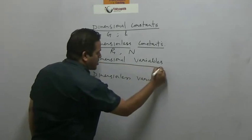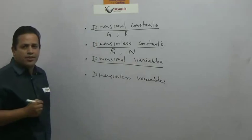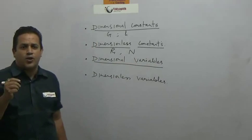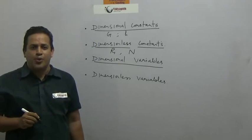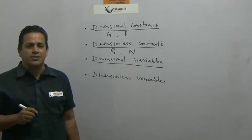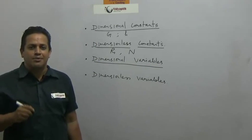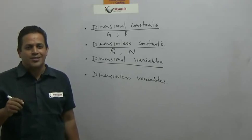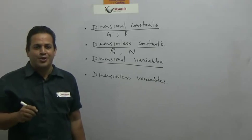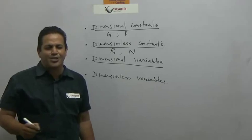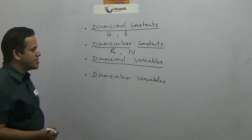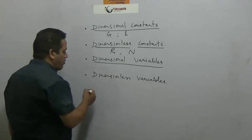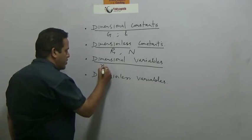The next one is dimensional variables. 95% of physical quantities fall under this category. Whether it is distance or displacement, speed, velocity, momentum, force, energy, pressure, pressure gradient - any physical quantity that you deal with, most of them actually fall under this category of dimensional variables. Let me put down a few important ones for you.